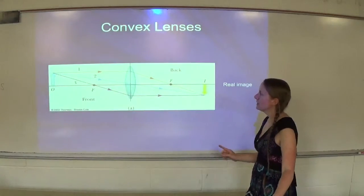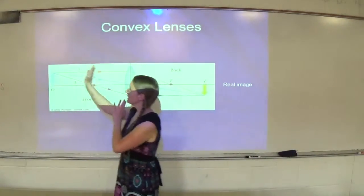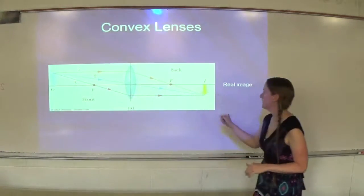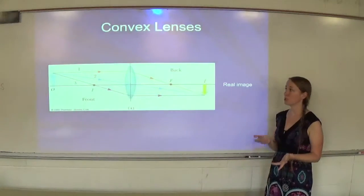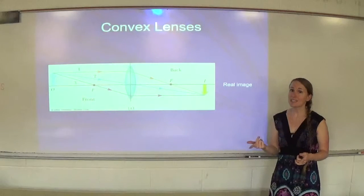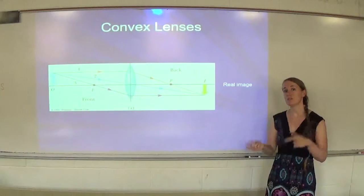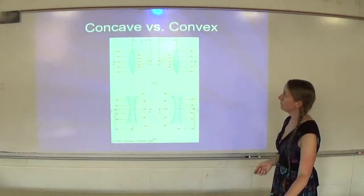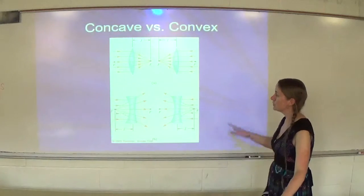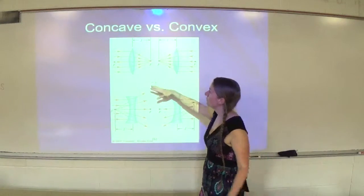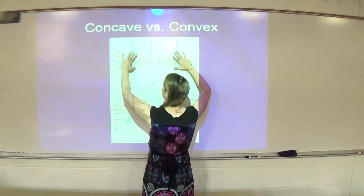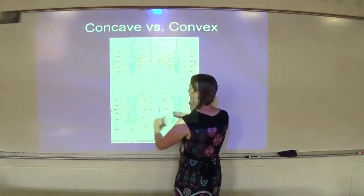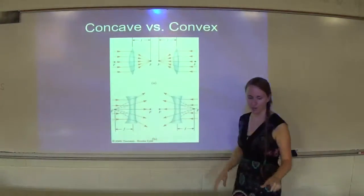If the object is past the focal point, a convex lens can form a real image — and remember, a real image can be projected. So convex lenses can form both real and virtual images, whereas concave lenses can only form virtual images. Here are more examples showing convex lenses converging rays and concave lenses spreading rays out.